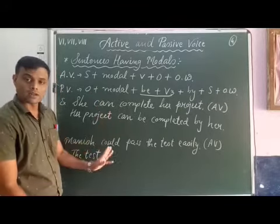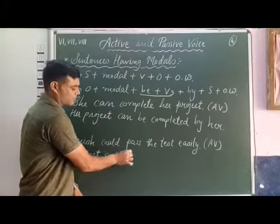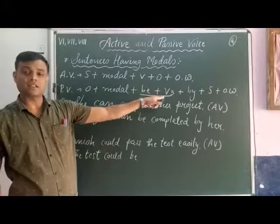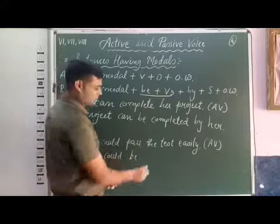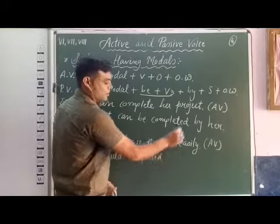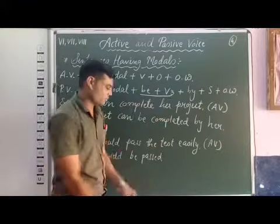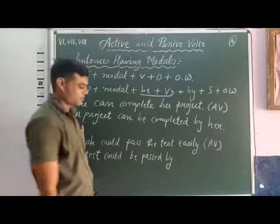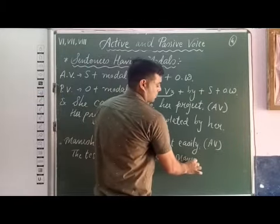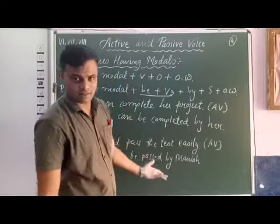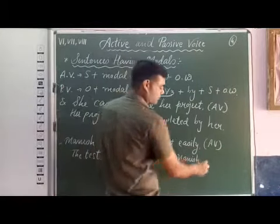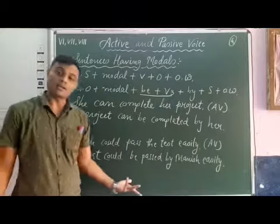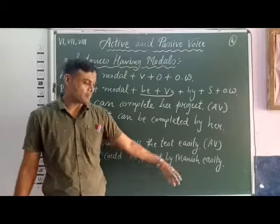After that, the modal — 'could.' After modal, the 'be' form — 'be.' After be, V3 — V3 of 'pass' is 'passed.' After V3, 'by.' After by, the subject — 'Monies.' After the subject, other words — 'easily.' Full stop. The sentence transformed in passive voice: 'The test could be passed by Monies easily.'